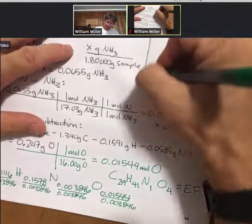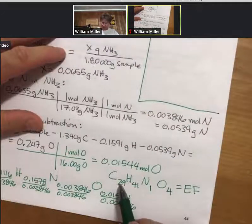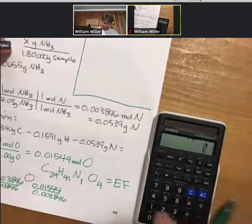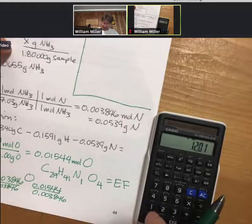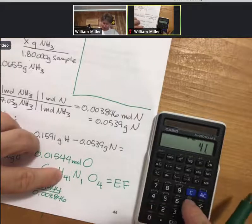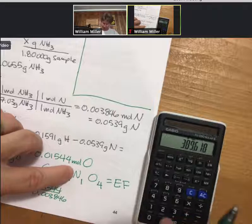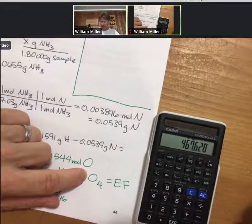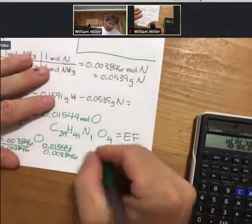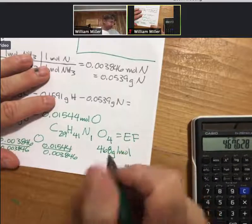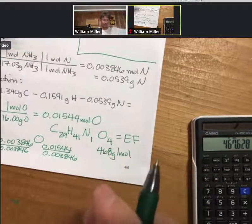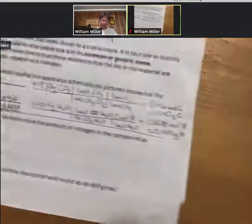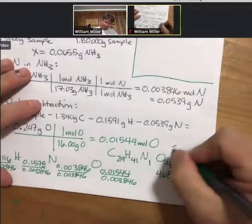And in the space that's up here, I will then, well, let's say if I take this and figure out what the molar mass is, it would be 29 times 12.01 plus 41 times 1.008 plus 14.01 plus 4 times 16. And I get a molar mass of this of 468 grams per mole. And in the problem statement, it said that the molar mass was 468 grams per mole. And so what that tells us is that this is also the molecular formula.